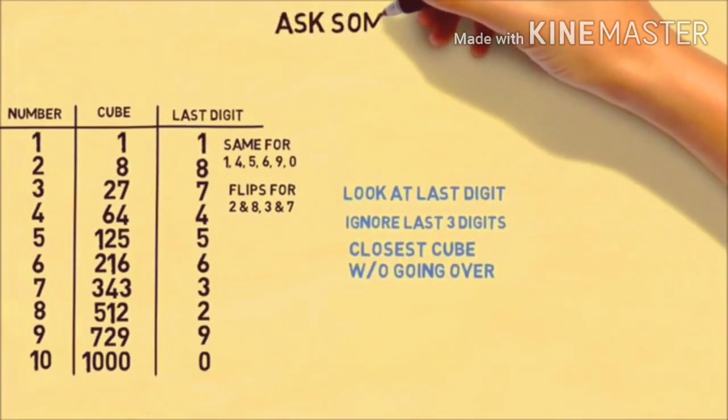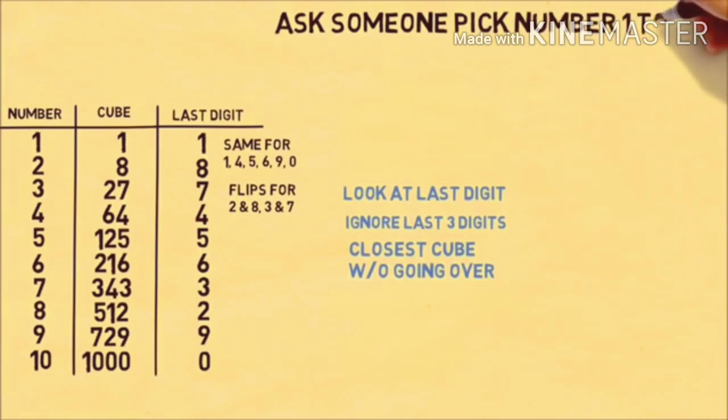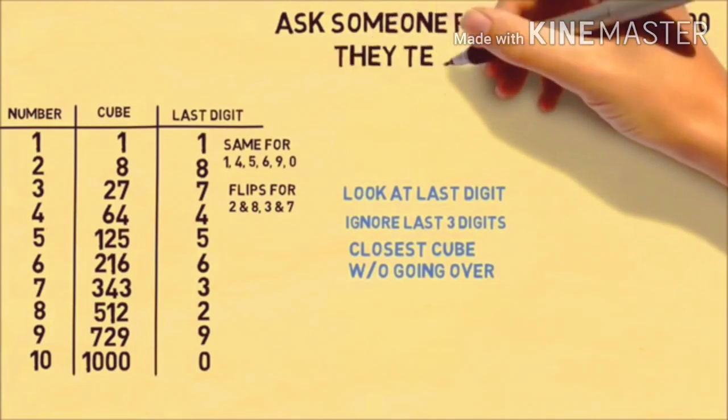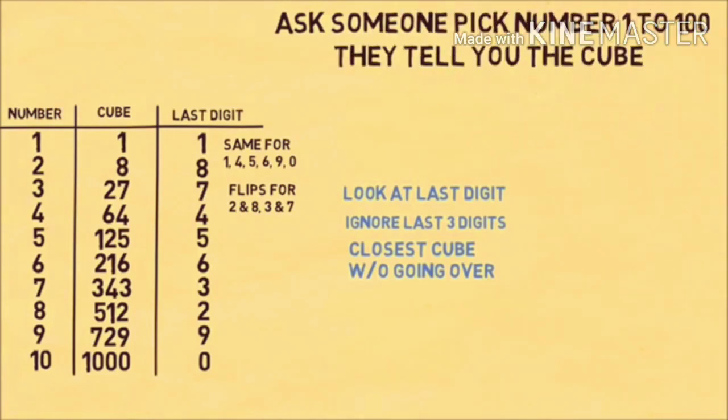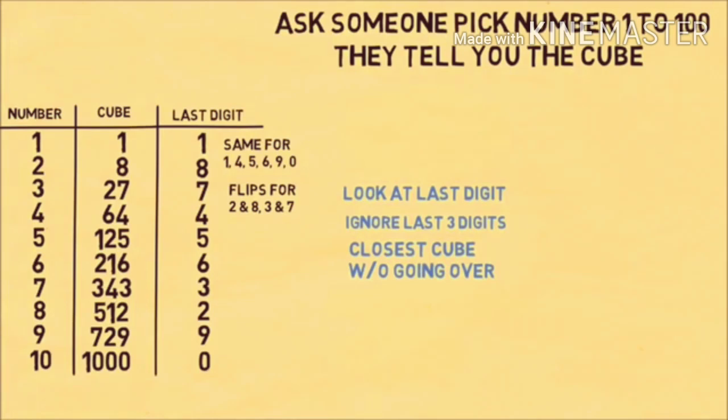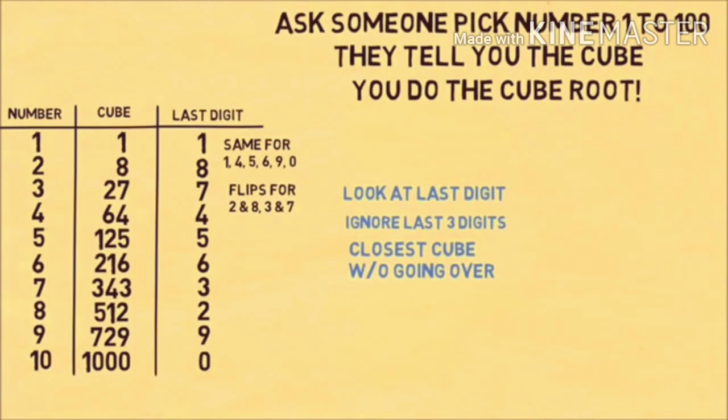Why would this be useful? Here's a trick you can do. Ask someone to pick a number from 1 to 100 and think about it secretly. Don't have them tell you the number. Have them cube it on a calculator. Once they tell you the cube, you can instantly tell them the cube root by using this table and the trick.